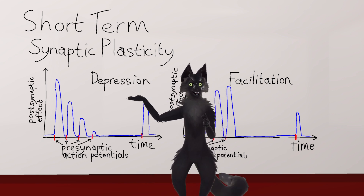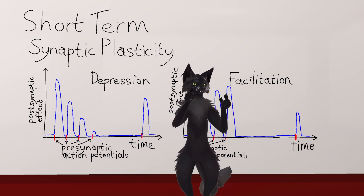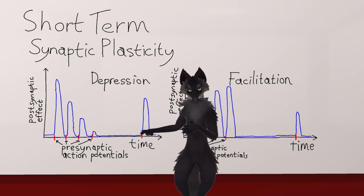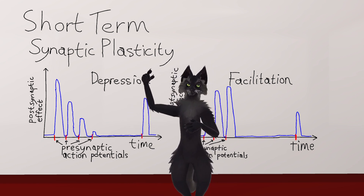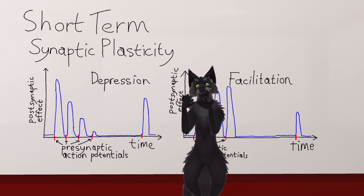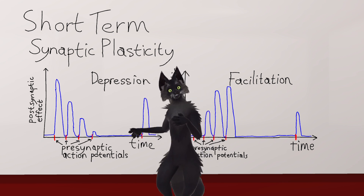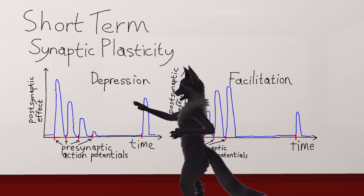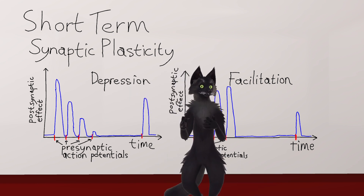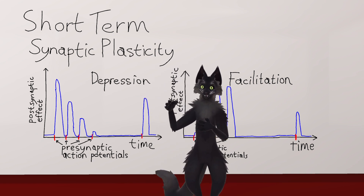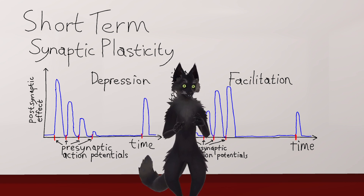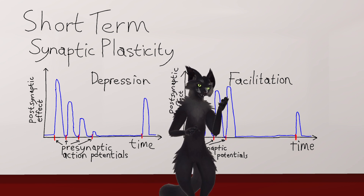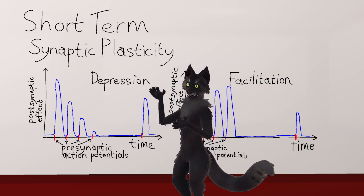First, we're going to discuss synaptic depression. Synaptic depression is when the synapse stops responding for a short while due to overactivity. In the diagram, the x-axis is time and the y-axis is the magnitude of the effect of the synapse on the postsynaptic dendrite. Each red mark on the x-axis indicates when an action potential passes through the presynaptic axon and into the synapse. The first time the synapse receives an action potential it has a large effect, but every subsequent action potential has a weaker and weaker effect. By the fourth action potential, the synapse has basically stopped responding — it's gone silent. But after a short pause, the synapse recovers back to full strength.